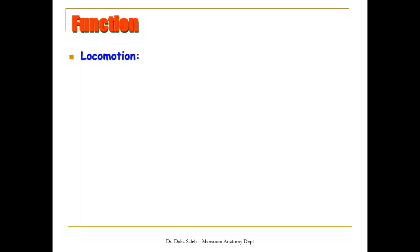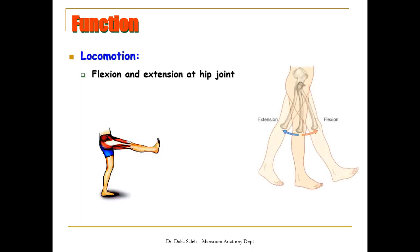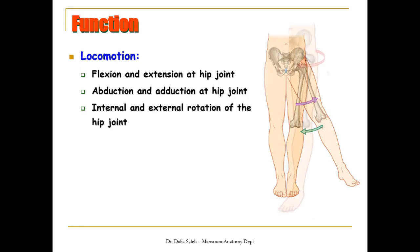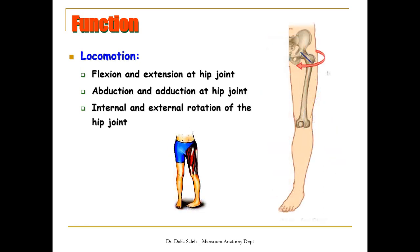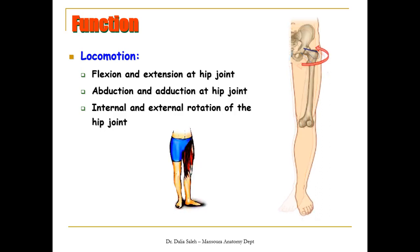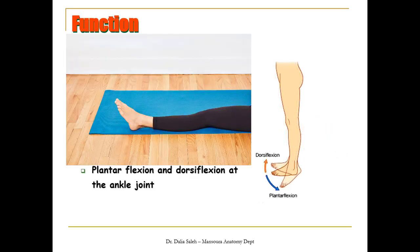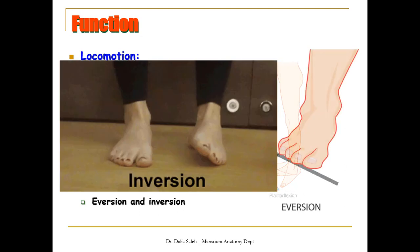The other important function of the lower limb is locomotion, which occurs at the joints. At the hip joint we have flexion and extension, abduction and adduction, and also internal or medial rotation when you move the neck of the femur inward or to the front, and external or lateral rotation when the neck of the femur moves backwards. At the knee joint we have flexion and extension, while at the ankle joint we have plantar flexion and dorsiflexion. At the subtalar joint we have eversion and inversion.